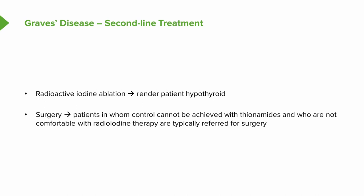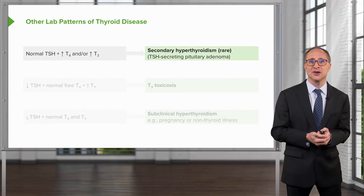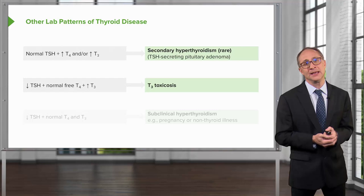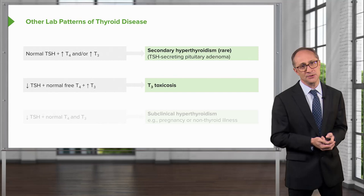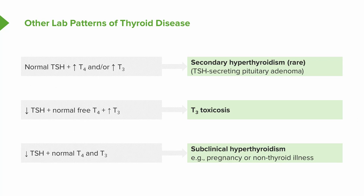Other lab patterns of thyroid disease worth mentioning: when you see a normal TSH but an elevated T4 and/or T3, consider the rare condition of secondary hyperthyroidism caused by a TSH-secreting pituitary adenoma. Where the TSH is low plus a normal free T4 but an elevated T3, this is the condition known as T3 toxicosis. And finally, if the TSH is low with a normal T4 and T3, consider the condition of subclinical hyperthyroidism — typical causes of which include pregnancy and other non-thyroidal illness.